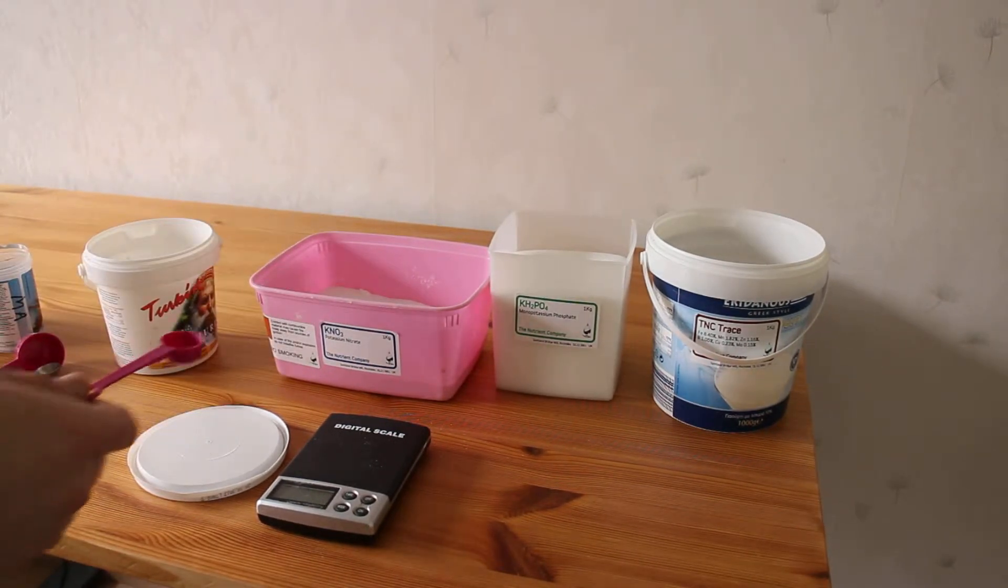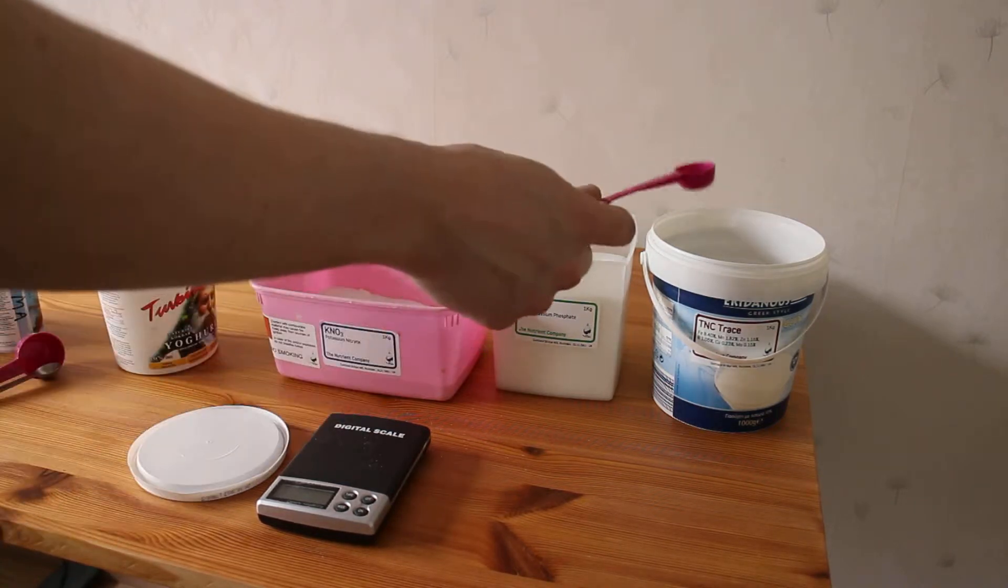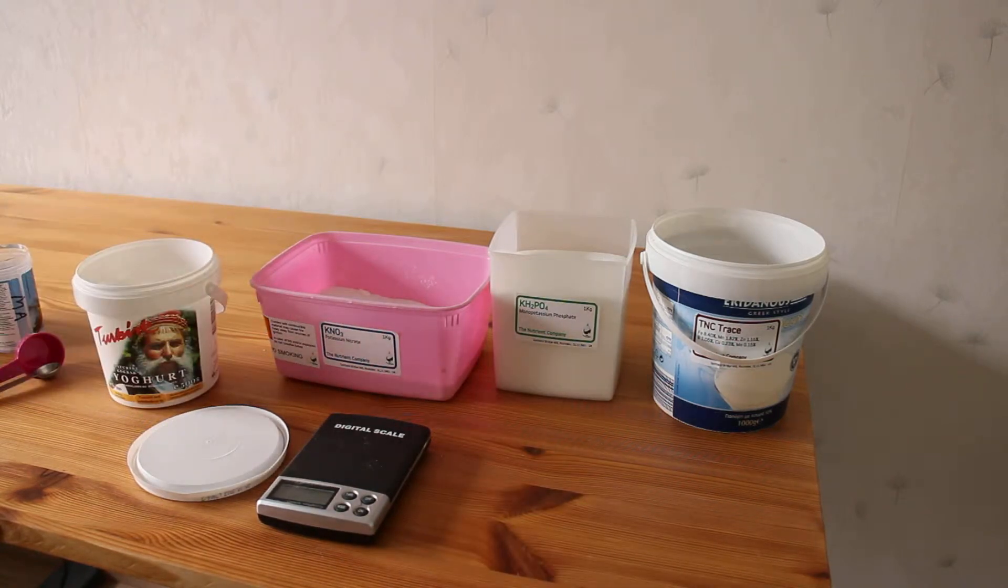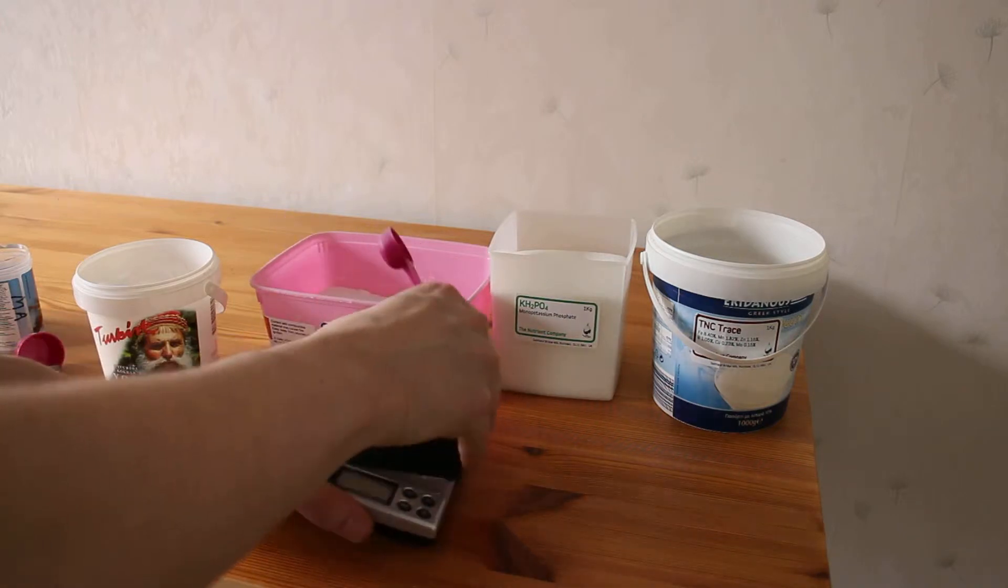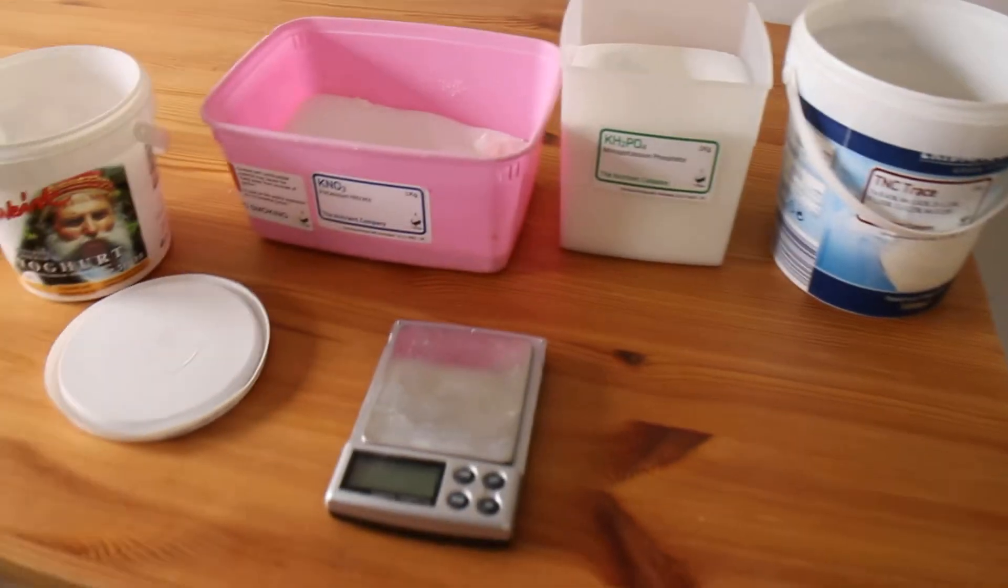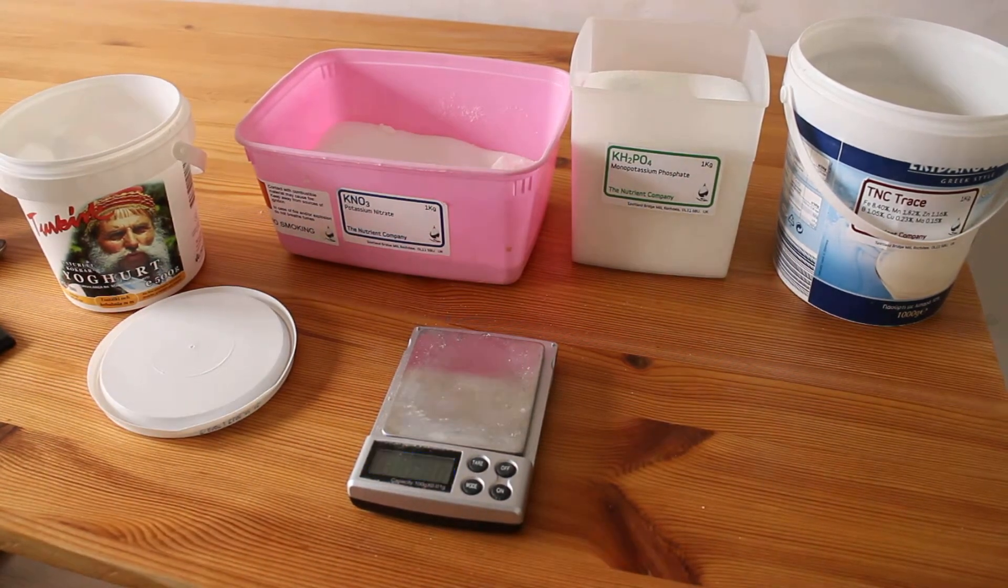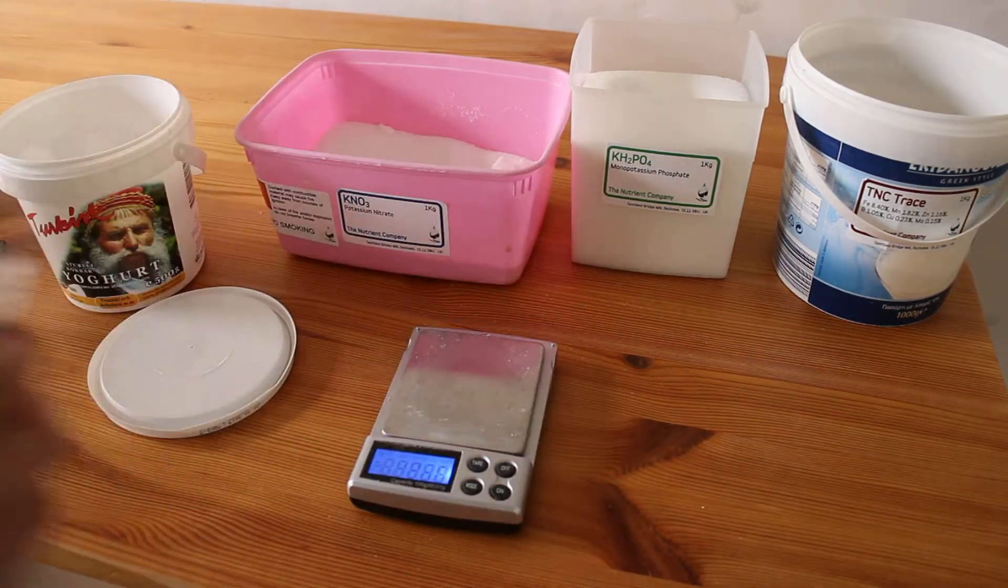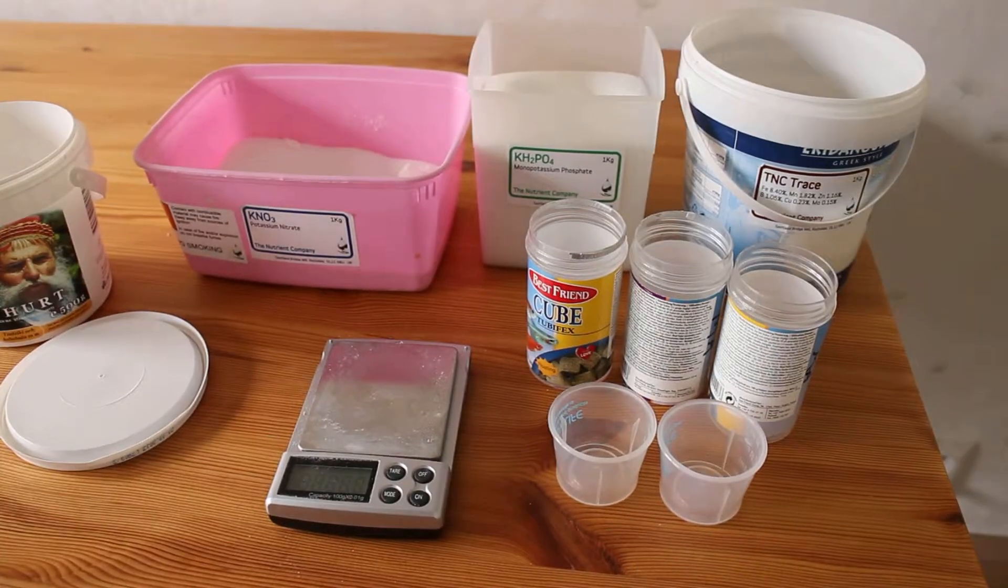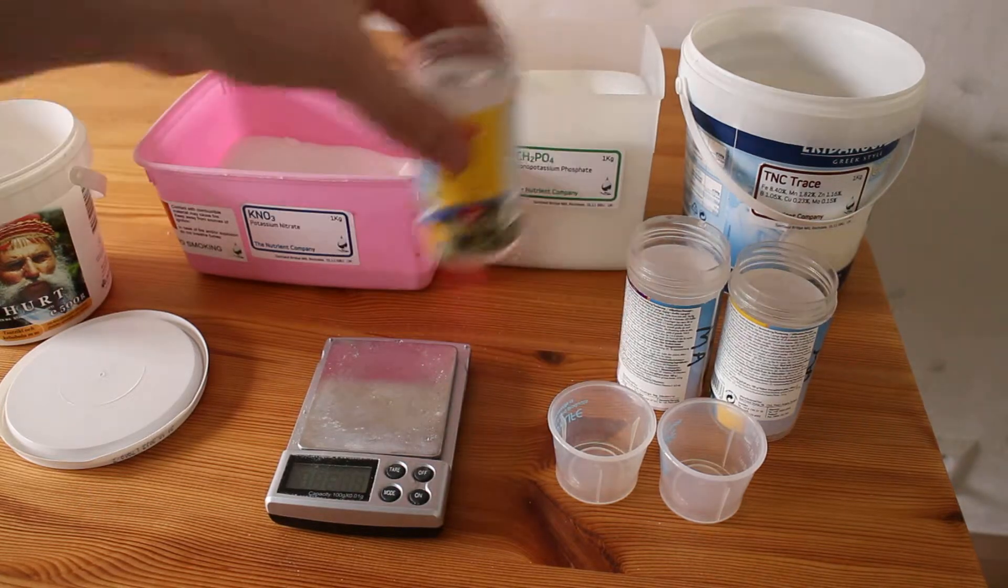First is potassium nitrate, then there is monopotassium phosphate, then there is this mixture of trace elements, and then there is magnesium sulfate. I am making these measurements with this small scale, and I have a five-day schedule. These are for macro fertilization, and these are for micro, like the trace elements.